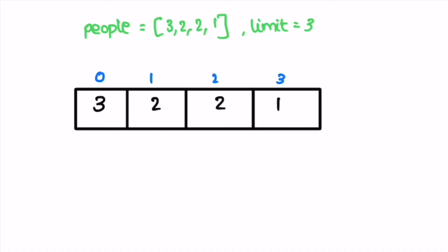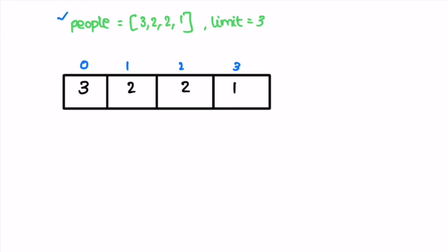Let's take a look at the example. I've taken the same input array 'people' given to us. We declare a result variable called 'boats' initialized to zero, and finally we return this variable. To solve this question we sort the weights in ascending order so we can access the heaviest and lightest person easily. After sorting, we declare two pointers: the left pointer points at the beginning of the array accessing the lighter person, and the right pointer points at the end accessing the heavier person.